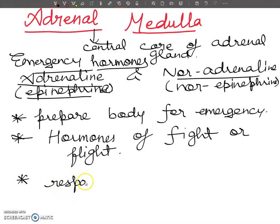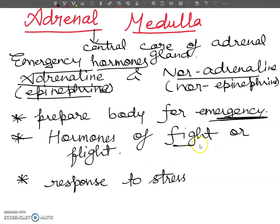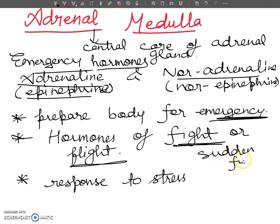Humans produce a greater amount of adrenaline. These hormones are produced in response to stress conditions of any kind — during emergency situations, sudden fear, anger, or coordination problems involving the sympathetic nervous system. At that time, these hormones are released.